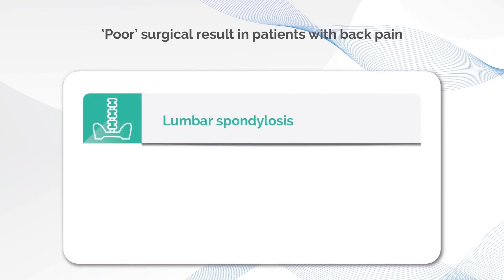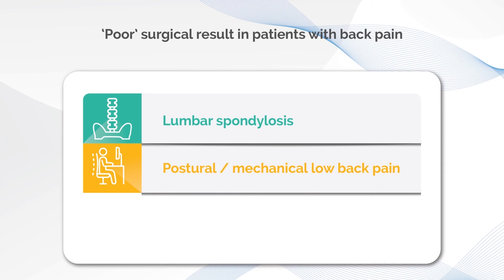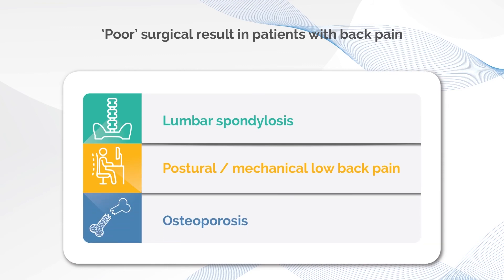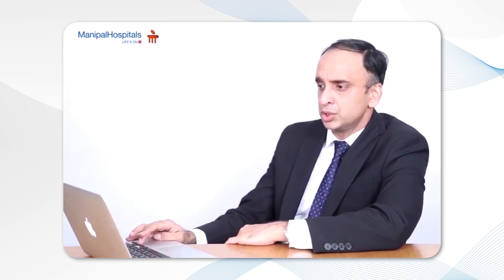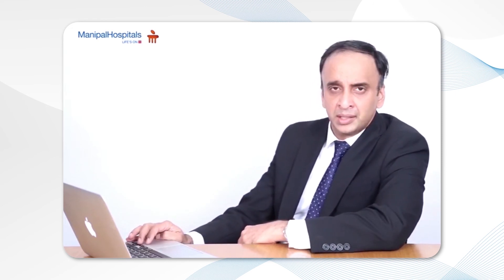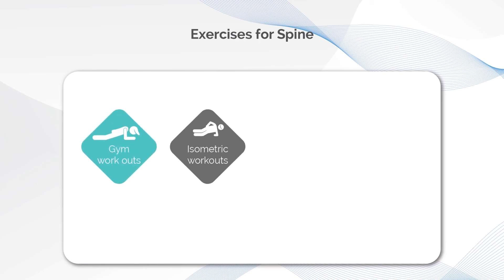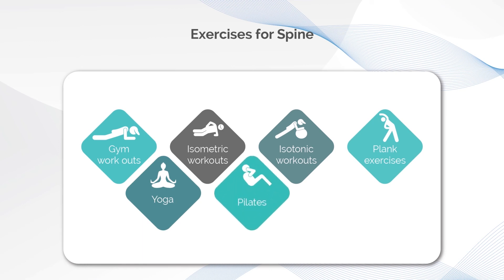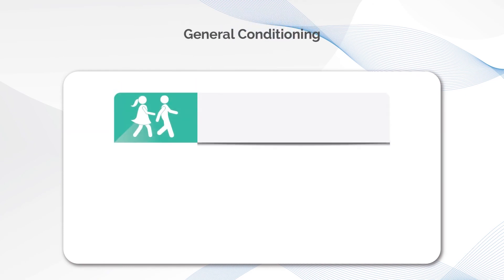Poor results are seen in patients who have lumbar spondylosis — age-related changes not compressing any nerves — or postural and mechanical back pain due to poor posture or poor muscle strength, or when there is osteoporosis where weak bones make surgery with screws challenging. The mainstay of treating back pain and mild nerve compressions is adequate exercise: gym workouts, isometric and isotonic workouts, plank exercises, yoga, pilates, and aerobics all have a role, provided they are done under supervision. General conditioning exercises like walking, cycling, and swimming are of utmost importance.